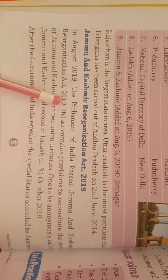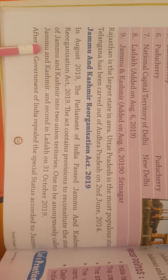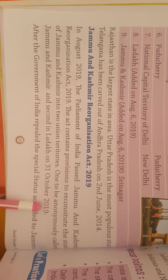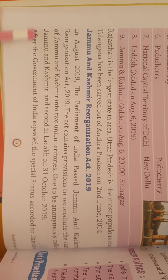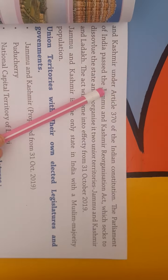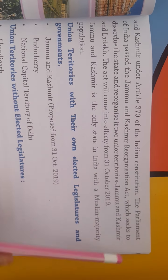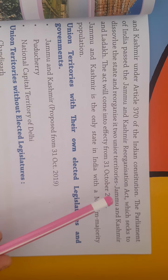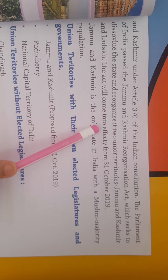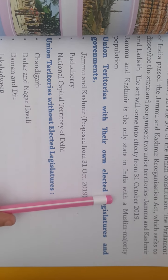In August 2019, the Parliament of India passed the Jammu and Kashmir Reorganization Act 2019. The Act contains provisions to reconstitute the state of Jammu and Kashmir into two Union Territories — one to be called Jammu and Kashmir and the second, Ladakh, effective from 31 October 2019. This followed the Government of India repealing the special status of Jammu and Kashmir under Article 370 of the Indian Constitution. Jammu and Kashmir is the only state in India with a Muslim-majority population.